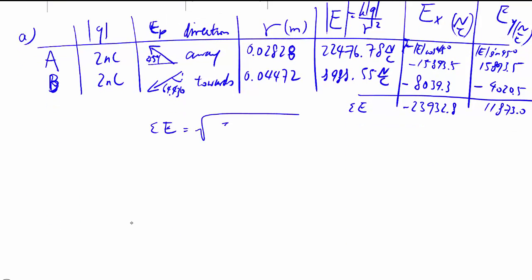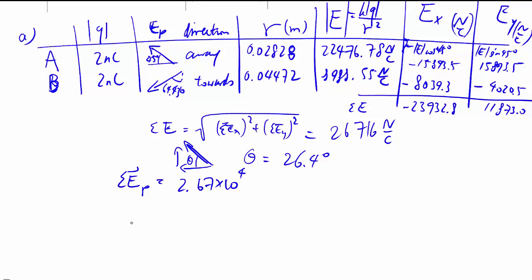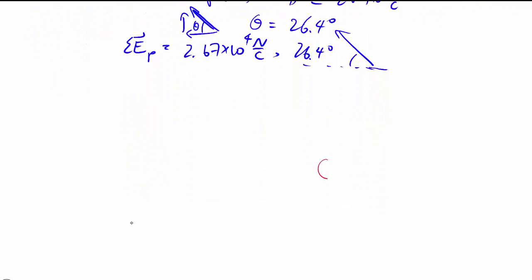Using Pythagoras then to work out my magnitude. And then we have a negative X, positive Y. Call that theta. We can work out that theta is 26.4 degrees. So therefore, the total electric field at point P must be something like that. And it kind of makes sense, because if you draw the entire field out.